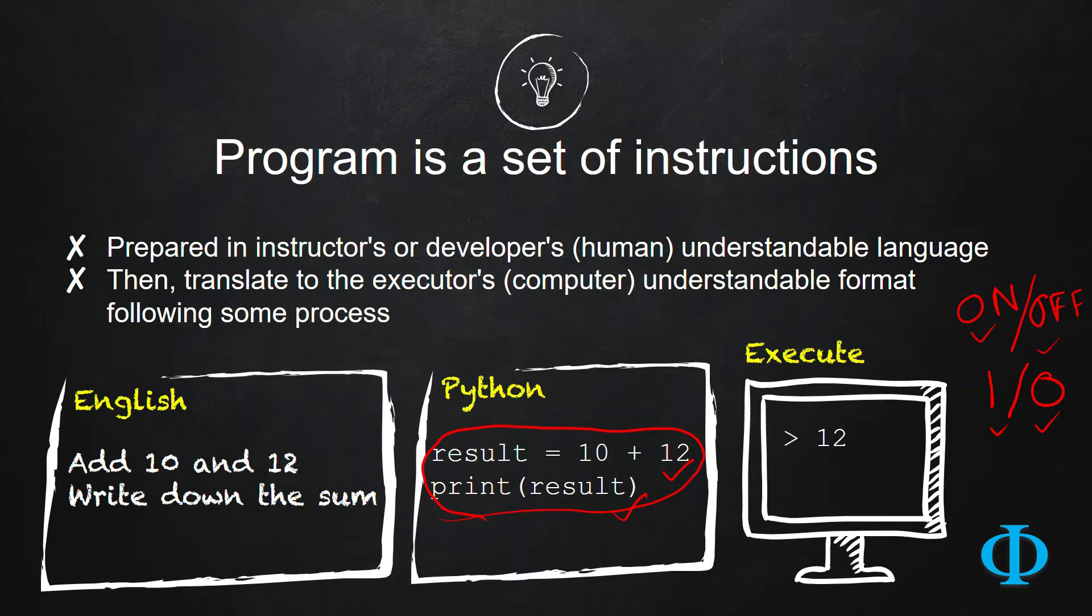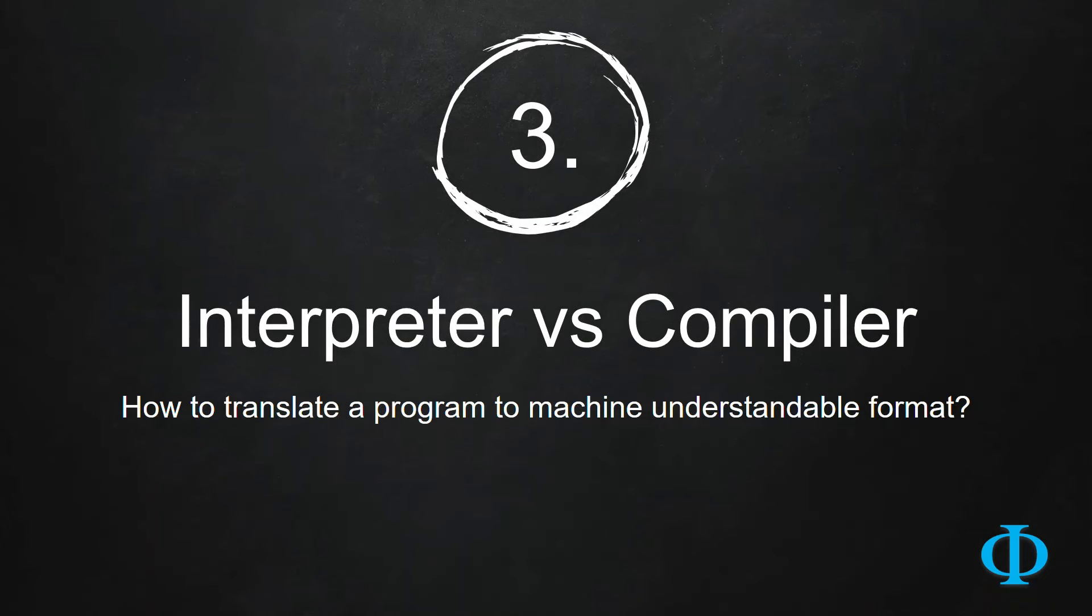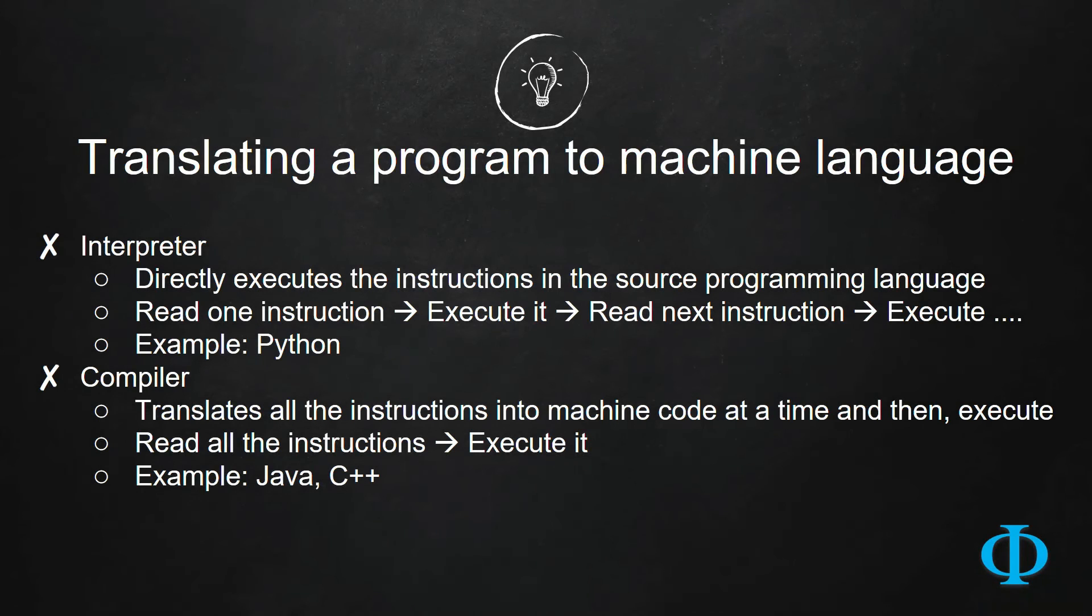So here comes a translator program. Here comes the concept of interpreter and compiler. These interpreters and compilers are basically another piece of software which translate the computer program to truly machine understandable language - that is, a sequence of zeros and ones.